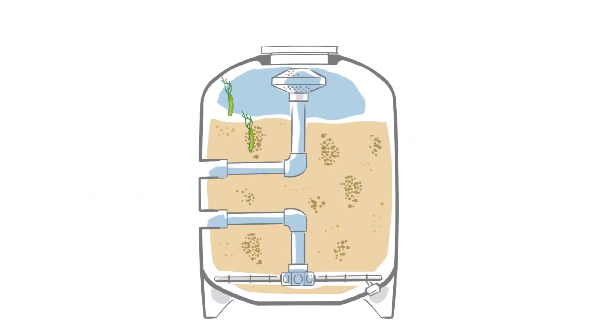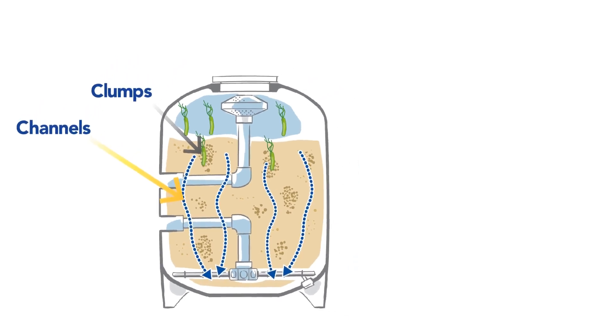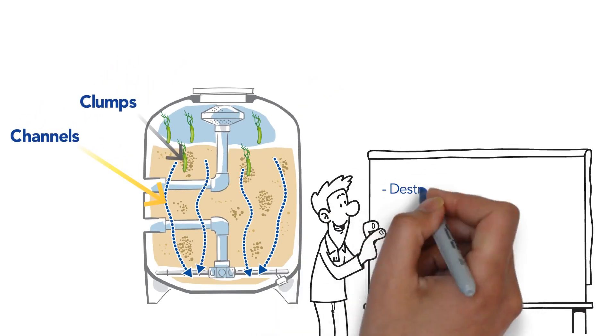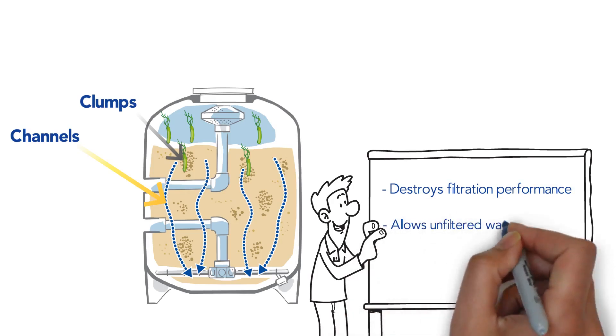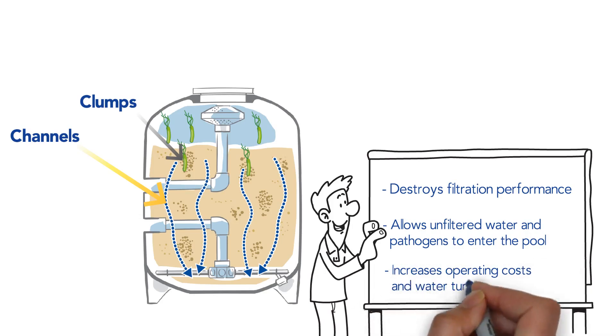After only six to twelve months, biofilm starts forming clumps, leading to the formation of channels in the filter bed. With time, filtration performance becomes inconsistent and unreliable, by allowing unfiltered water and bacteria to enter the pool, while increasing operating costs and water turbidity.